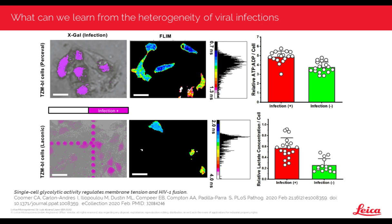This allows us to see the metabolism of cells before infection. We add viral particles of HIV, and then between 12 and 24 hours later use X-Gal assay to determine which cells have been infected. We can then correlate the metabolism of the cell before infection with whether it got infected or not. On top you have the TZMBL cells with Percival looking at the ATP over ADP ratio, and at the bottom, cells with a lactate biosensor. We can determine with the X-Gal which cells were infected, trace back each cell to its fluorescence lifetime imaging parameters, and show that infection-positive cells have both a higher ATP-to-ADP ratio and higher lactate concentration.